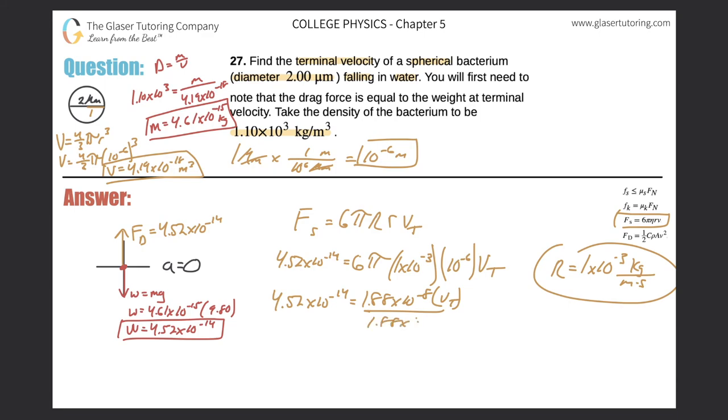Now we just want to solve for Vt. So divide out the 1.88 times 10 to the minus 8 from both sides. We get the terminal velocity being 4.52 times 10 to the minus 14 divided by 1.88 times 10 to the negative 8. And we get 2.40 times 10 to the minus 6, and that's meters per second.